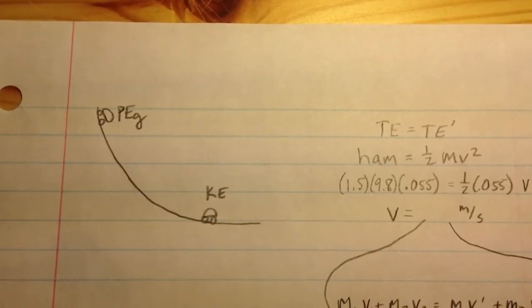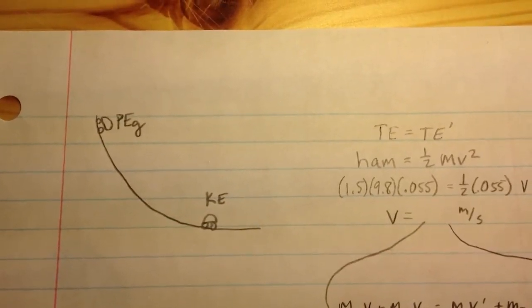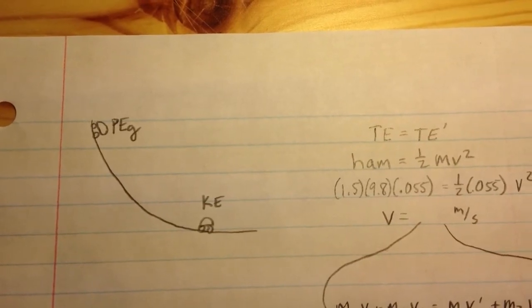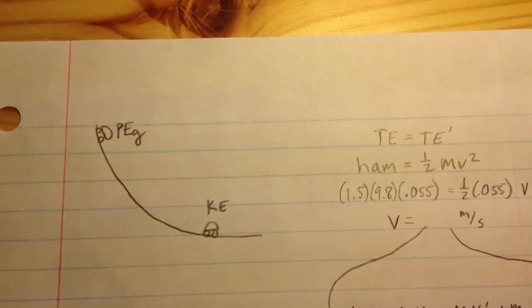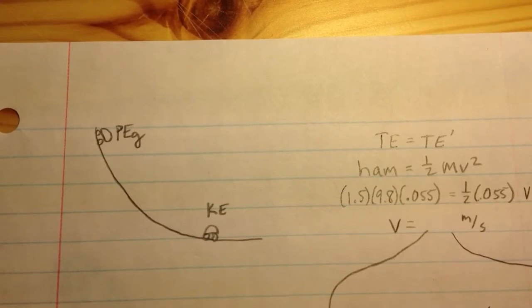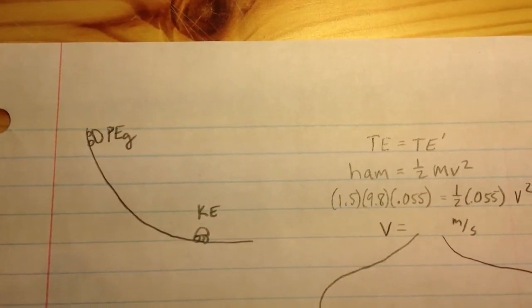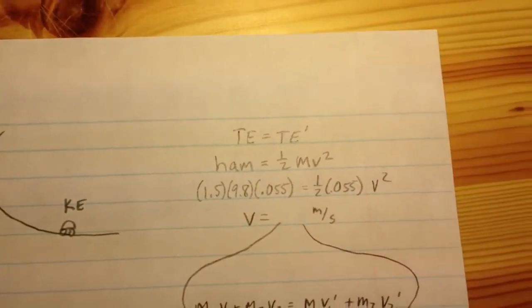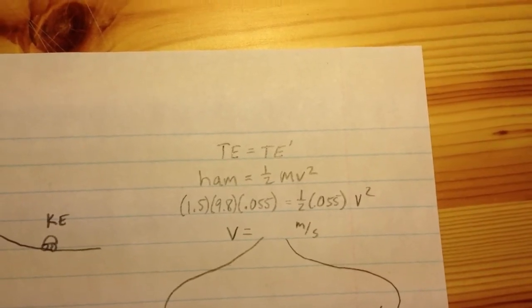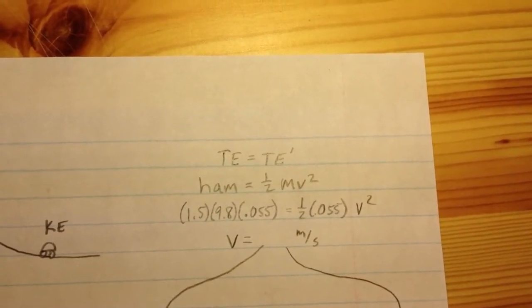Okay, you want to break this problem up in the parts. The first part, you want to look at car 1 coming down the incline. You start with potential energy and you end with kinetic. So to find the speed at the bottom, you set the potential energy at the top equal to the kinetic energy at the bottom.